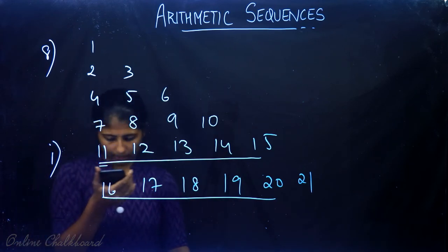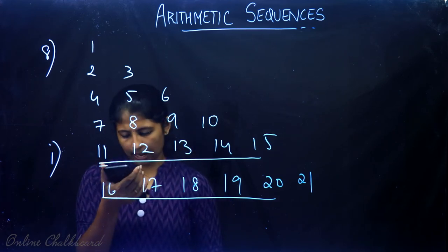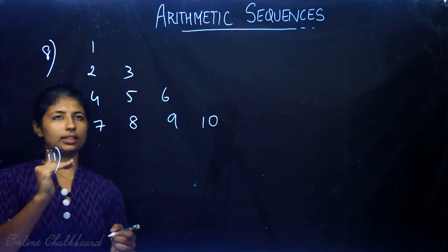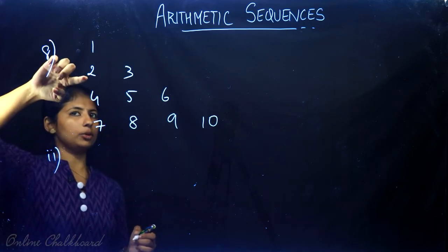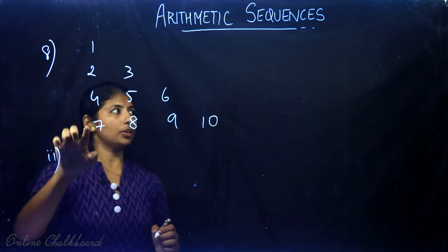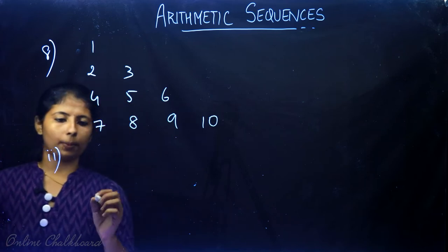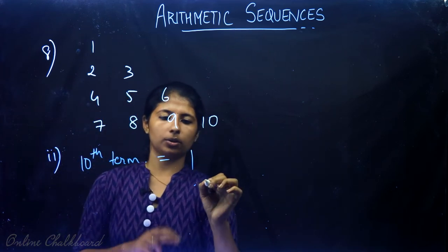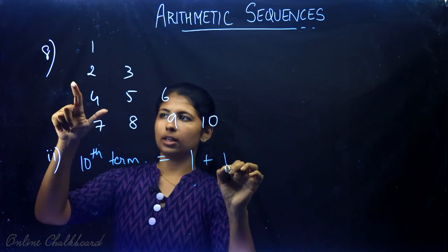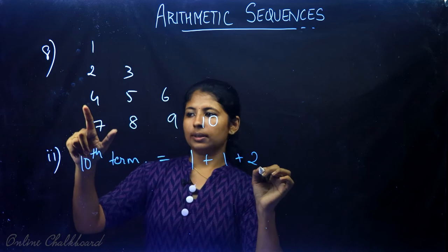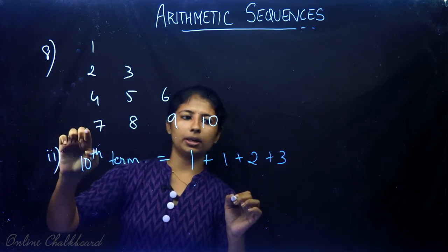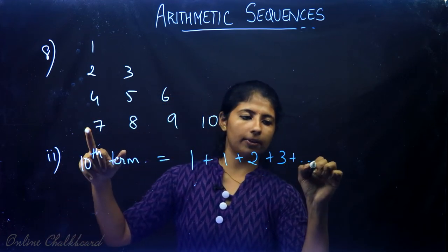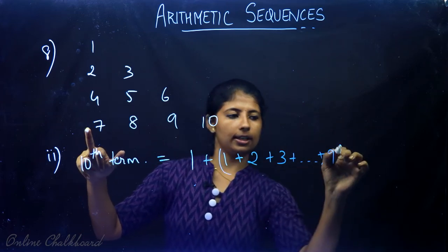Write the first and last numbers of the tenth line. This is going to be the 10th line. We need to figure out how each line's first term is determined.